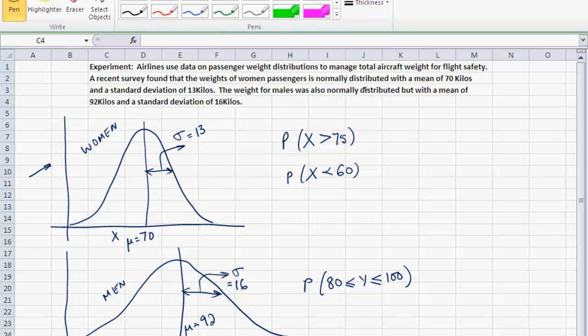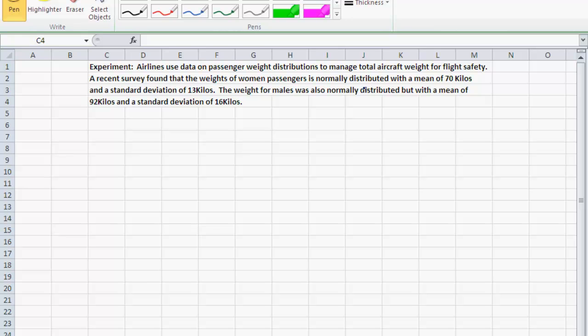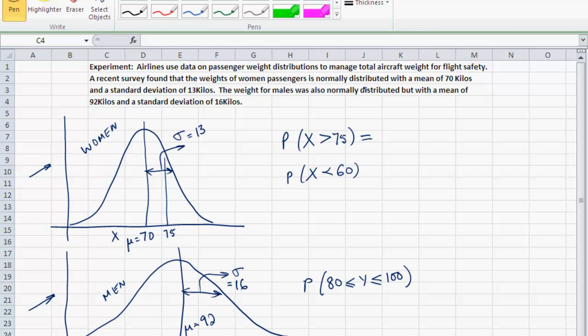I've represented that normal distribution by the first curve over here. That's the curve for women. And the weight for males is also normally distributed with a mean of 92 kilograms and a standard deviation of 16 kilograms. That's the second normal curve. Now, let's say I want to find the probability that a woman passenger who shows up for a flight, the probability that her weight is greater than 75 kilograms. The probability that X is greater than 75 is simply this shaded area, the area under this curve.